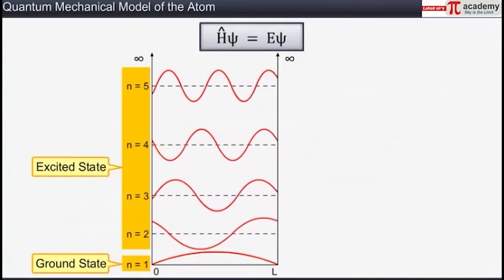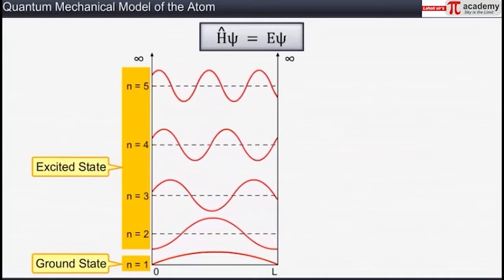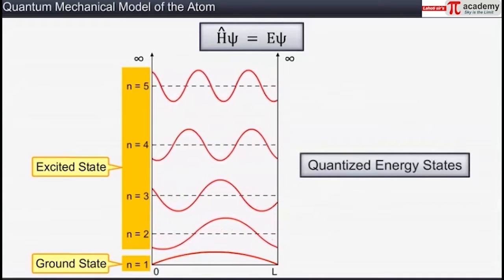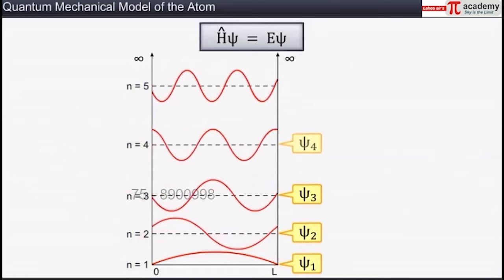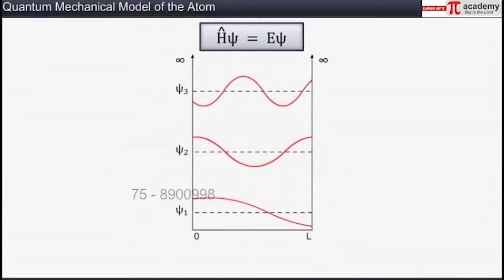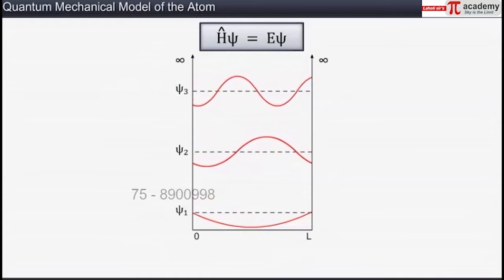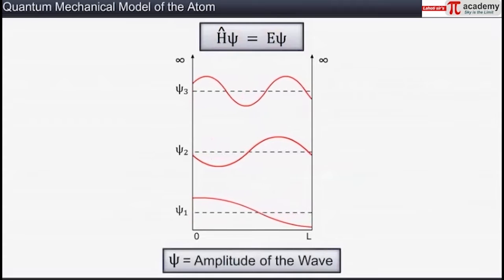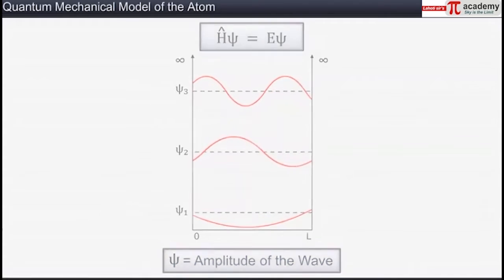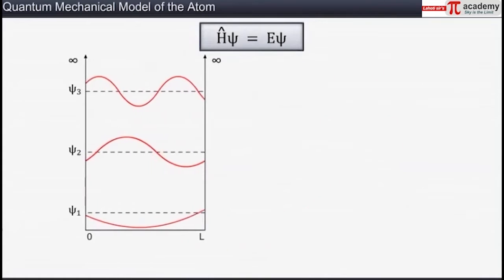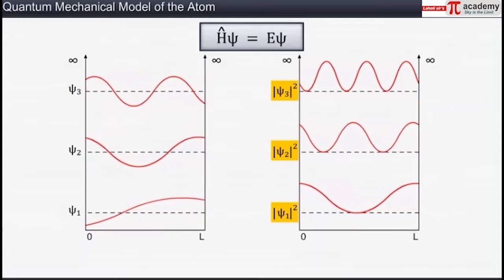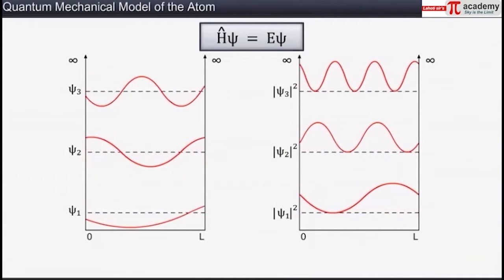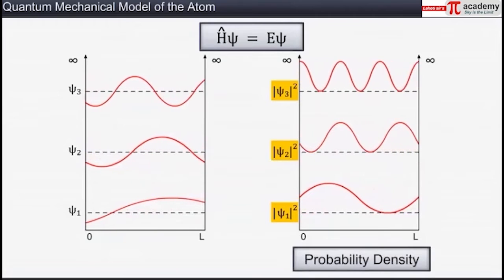When Schrödinger wave equation is solved for an electron of an atom such as hydrogen atom, it gives the values of the possible energy levels in which the electron can move — called quantized energy states — as well as the wave functions corresponding to these energy levels. In quantum mechanics, all the properties of a system are expressed in terms of a wave function obtained by solving the Schrödinger equation. The wave function psi is a mathematical function that represents the amplitude of the wave. It does not carry any physical significance. Therefore, the square of the amplitude of the electron wave, that is psi-squared, gives the probability of finding the electron at a point within an atom. The function psi-squared is called probability density and is always positive.